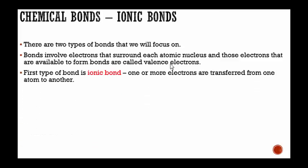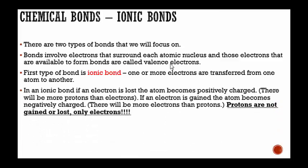The first type of bond is an ionic bond, where one or more electrons are transferred from one atom to the other. They are transferred. They go from one atom to another. There is a transferring.